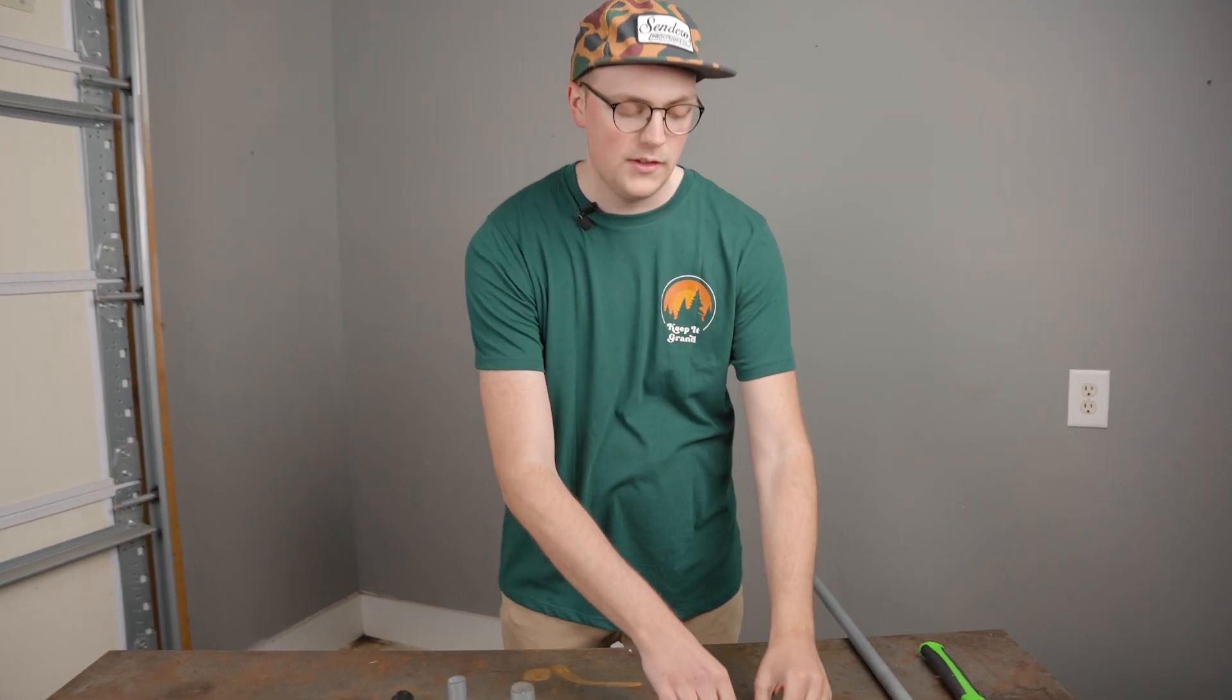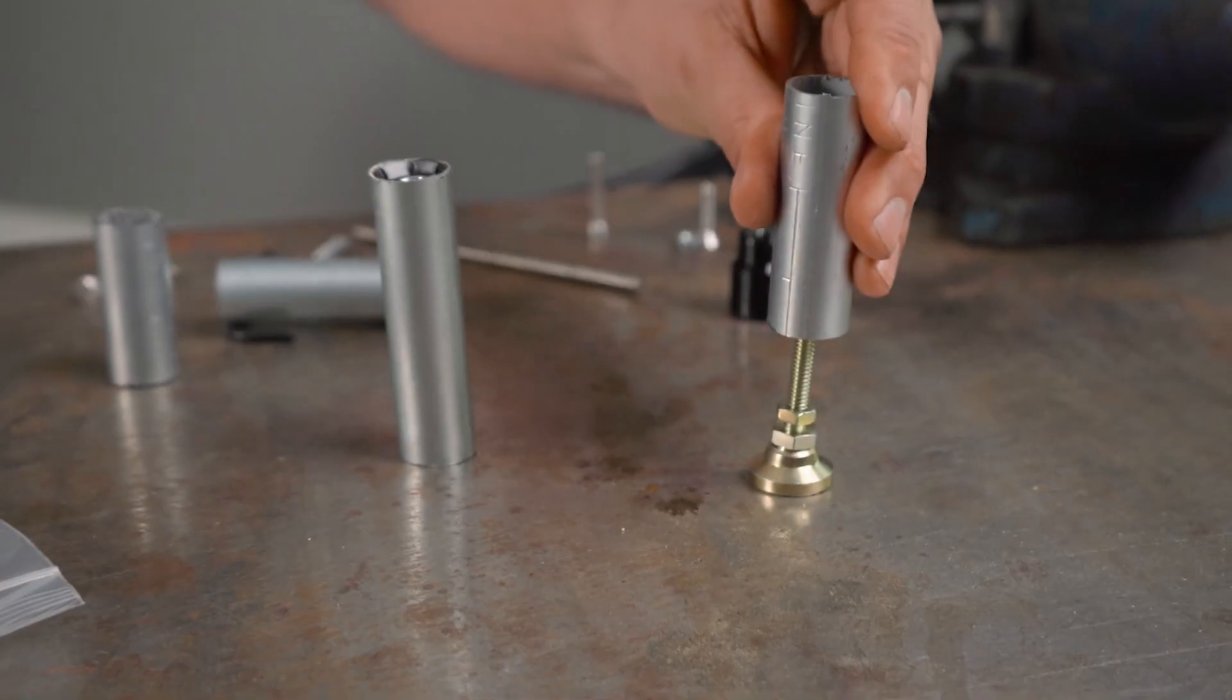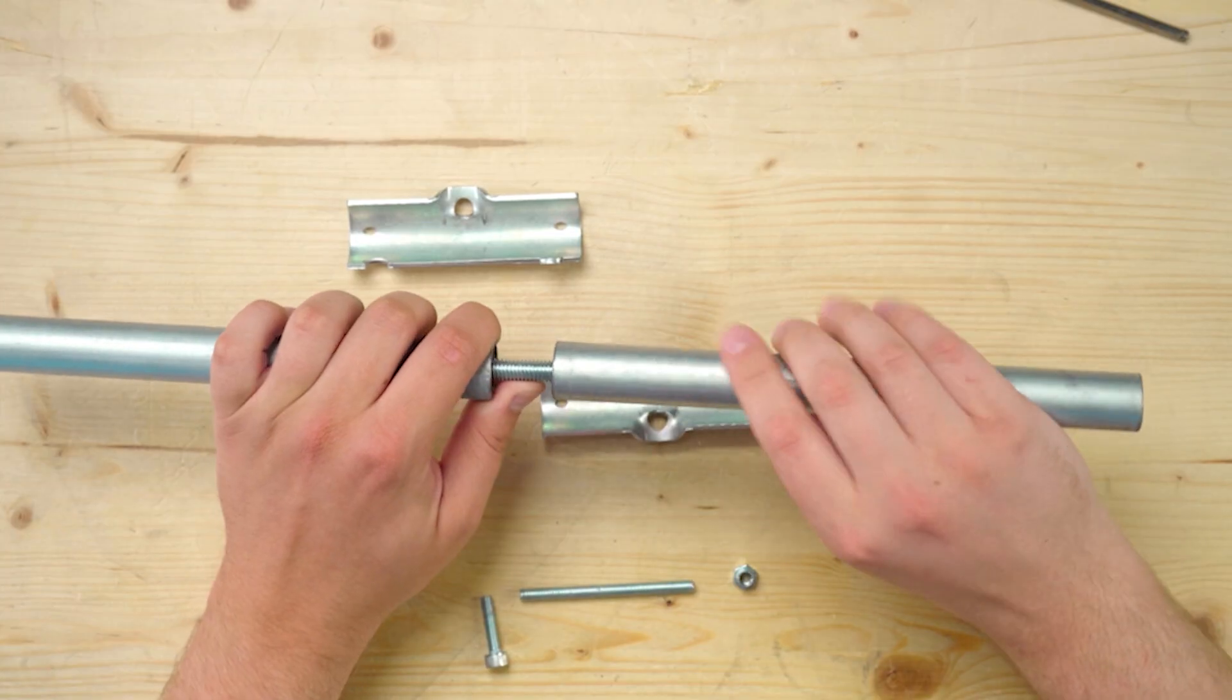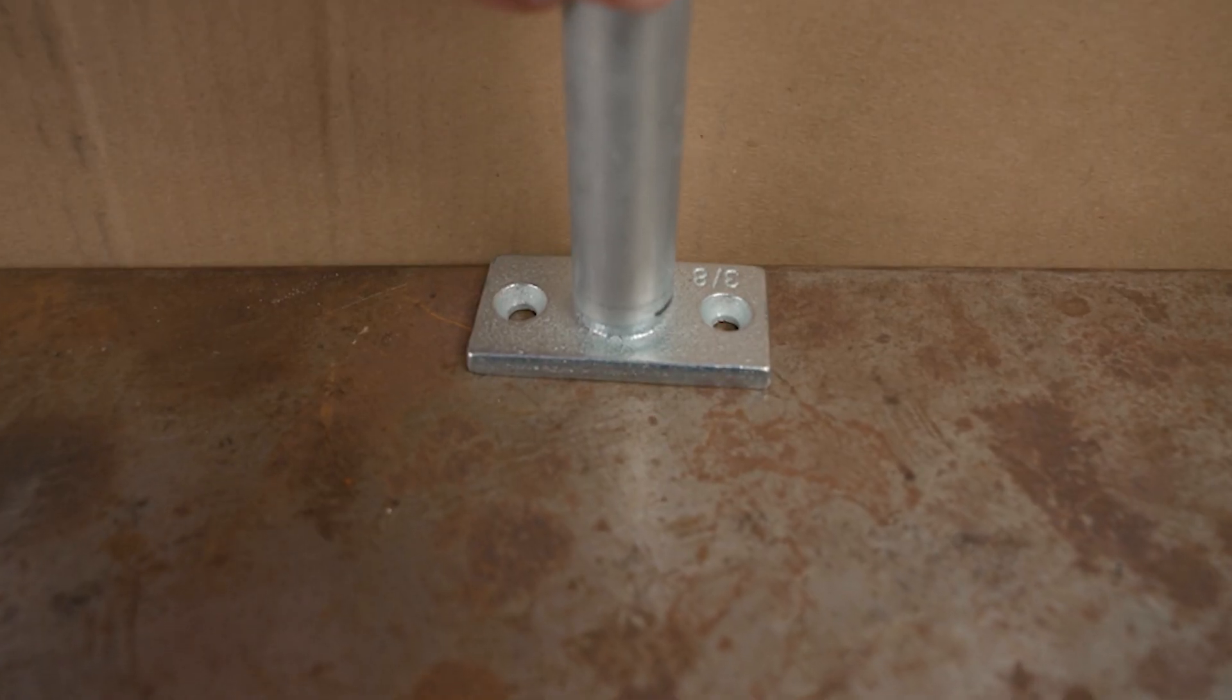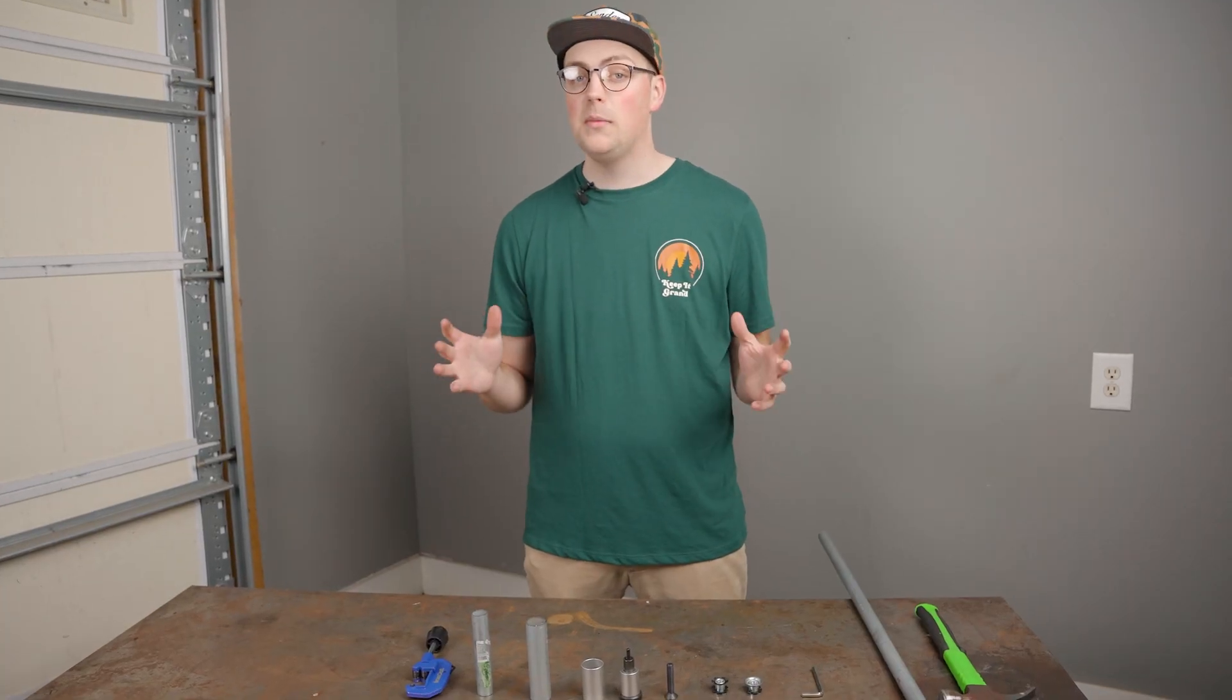We really love using these threaded pipe inserts in builds because they allow you to do some really cool stuff. You can add adjustable feet to your builds, you can join pieces of conduit together, they have all kinds of awesome possibilities that we've mentioned a lot on the channel, but they can be kind of challenging to put into the end of conduit.